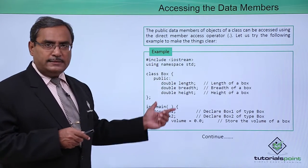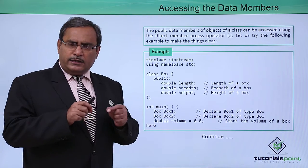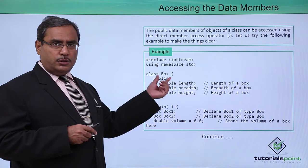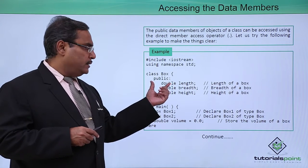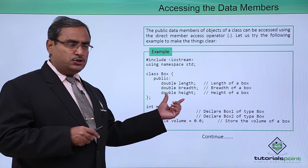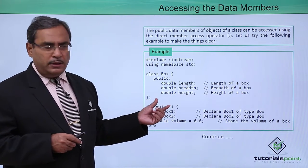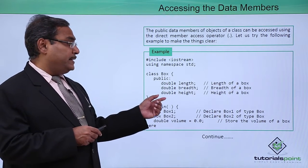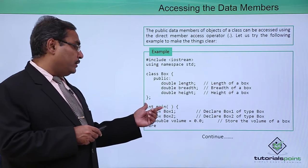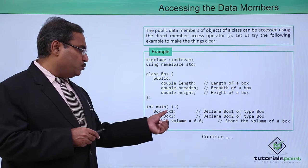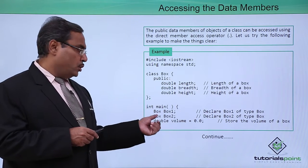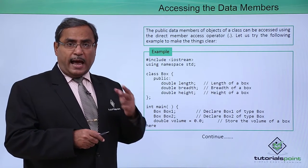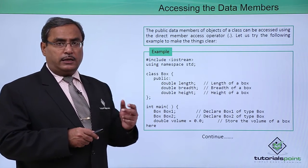Let us go through a detailed example. We define class box with a public section containing three data members, all of type double: length, breadth, and height. In the main function, we declare two objects under class box — 'box box1;' and 'box box2;' — so two objects are declared under the class box.